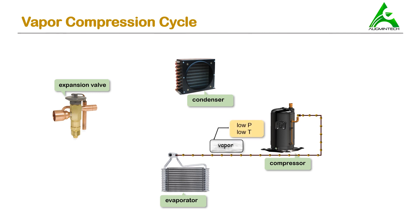In this cycle, first of all vapor refrigerant is fed into the compressor. This vapor refrigerant is at low pressure and low temperature. This is a very important property of the vapor refrigerant which enters the compressor — it has to be at low pressure and low temperature. Once this refrigerant enters the compressor, the job of the compressor is to compress this refrigerant.